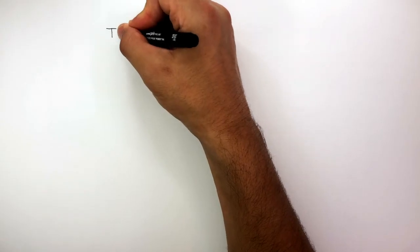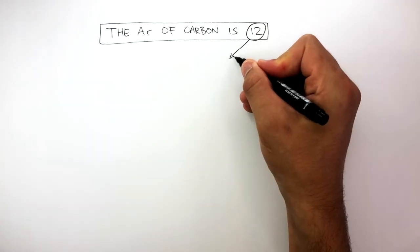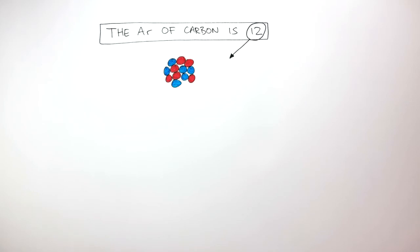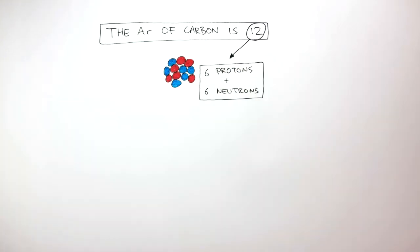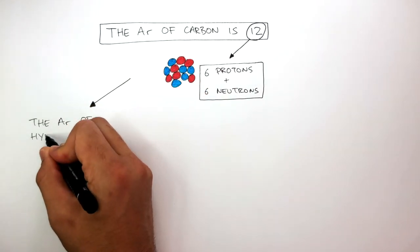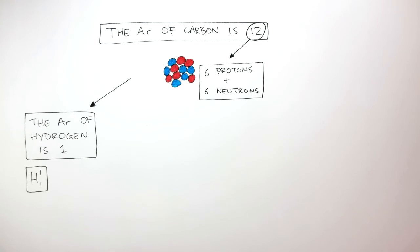So, the AR of carbon is 12, and we can see this when we look at this diagram of the nucleus, showing 6 protons and 6 neutrons, meaning the relative atomic mass is 12, whereas the AR of hydrogen is 1. We can see from this information, hydrogen has 1 proton in its nucleus, represented by the red circle.